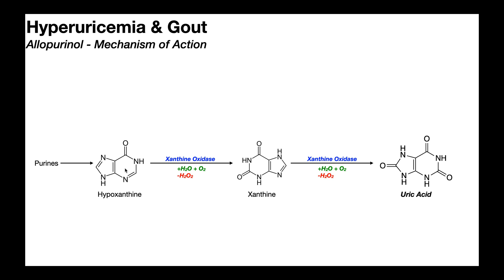Hypoxanthine is eventually converted into a molecule called xanthine by the action of the enzyme xanthine oxidase, which uses water and molecular oxygen to perform the reaction. If you look at the six-membered ring, this carbon between the two nitrogen atoms gets oxidized by the enzyme, and you end up with a double-bond oxygen — a carbonyl — added to that carbon.